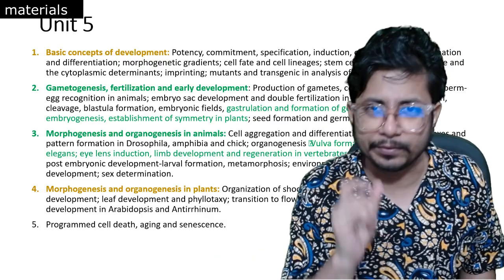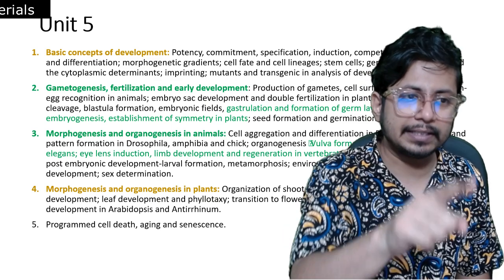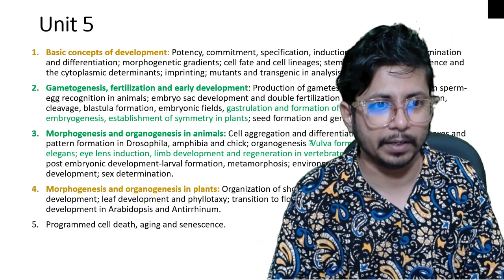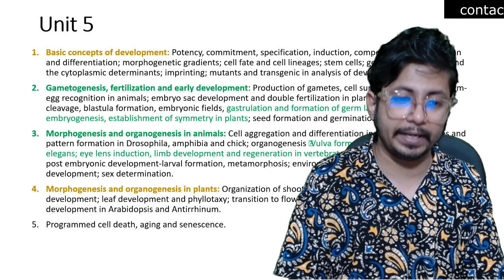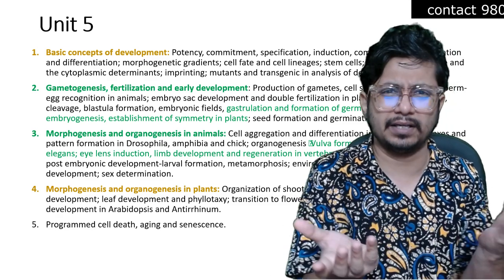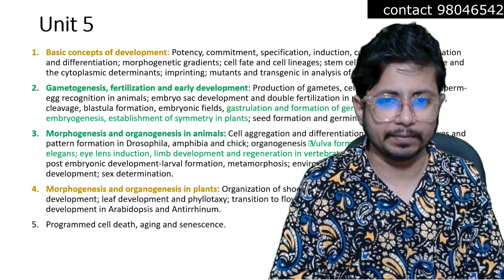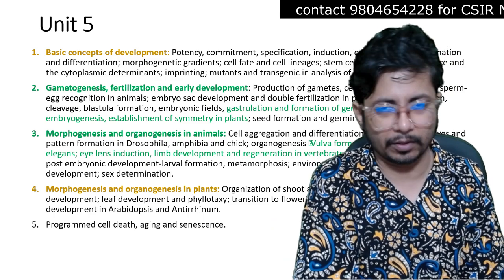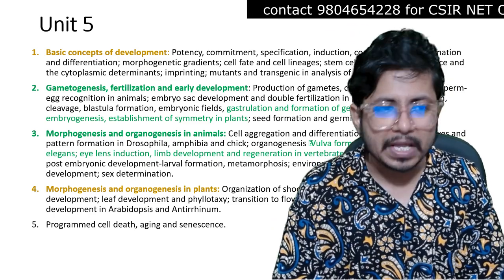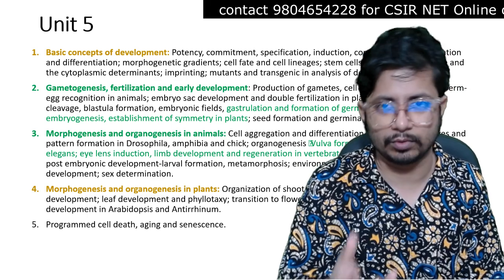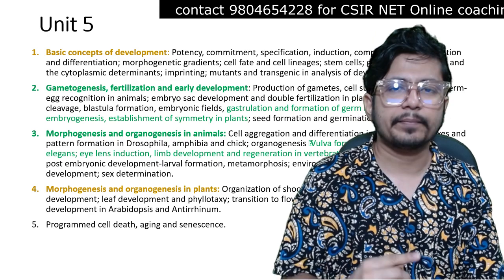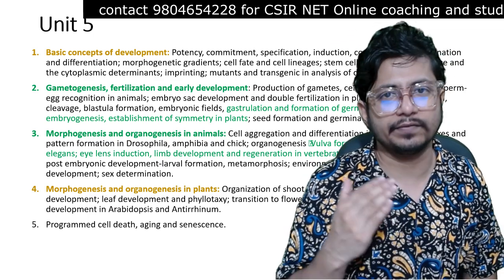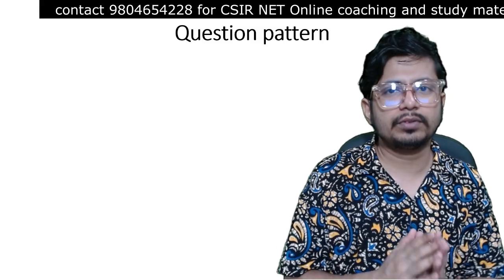Programmed cell death, aging, and senescence are not that important at all. Overall for Unit 5, animal development is more important - including basic concepts of development, gametogenesis, early development, and morphogenesis. For plants, only floral development in Arabidopsis, double fertilization, and establishment of symmetry are important. Many people fear Unit 5 because it's new to them, but preparing it will be easier if your cell biology understanding is crystal clear.